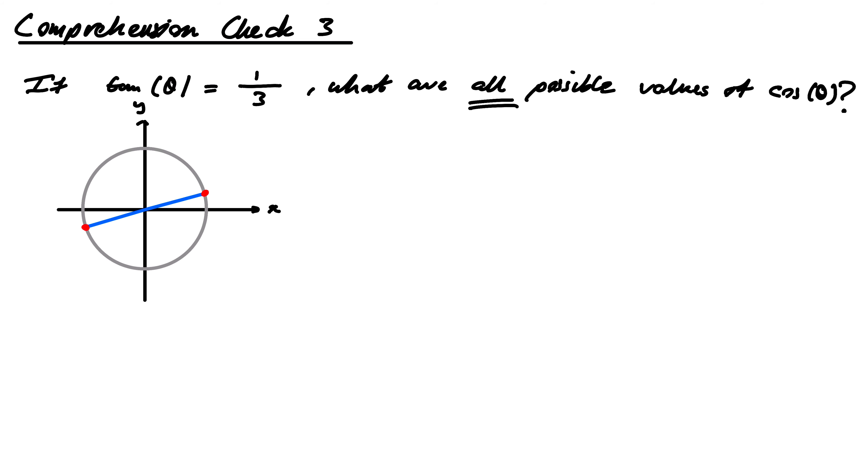And the cos values, or the x-coordinates there, are going to be negatives of each other. So that tells me there can't be one value of cos. There's going to be two potentials, depending on which of these two sides you're on. So this is slope of one third.